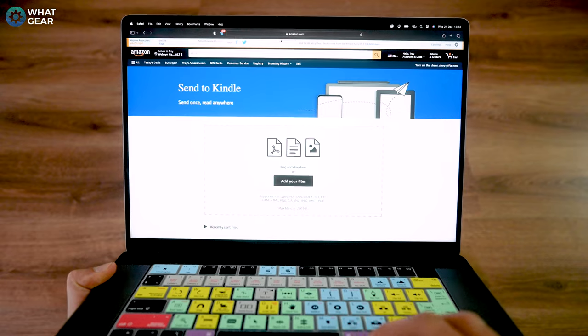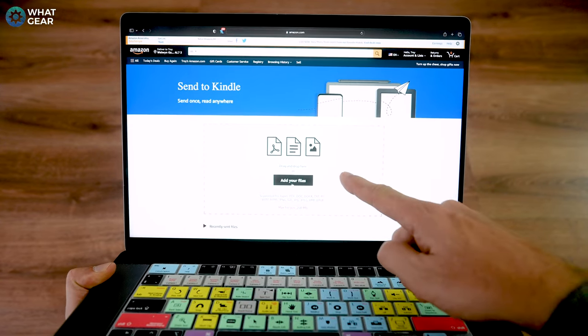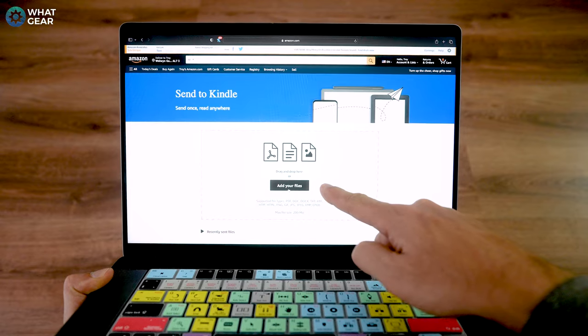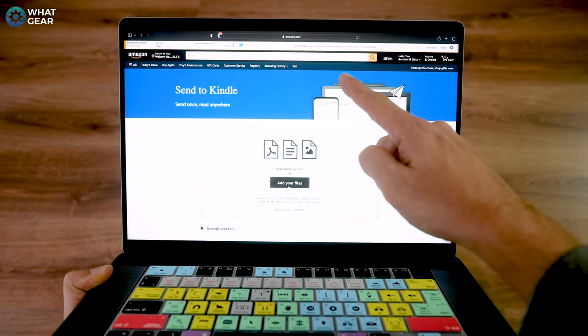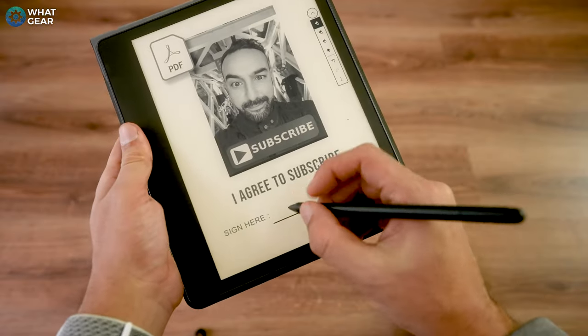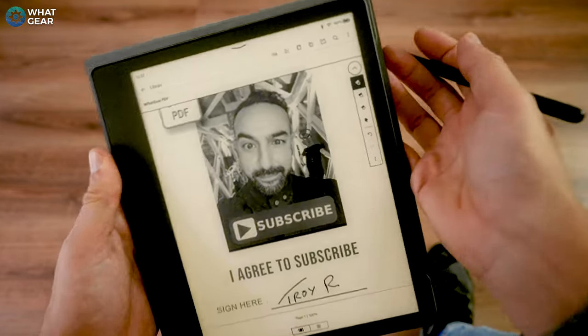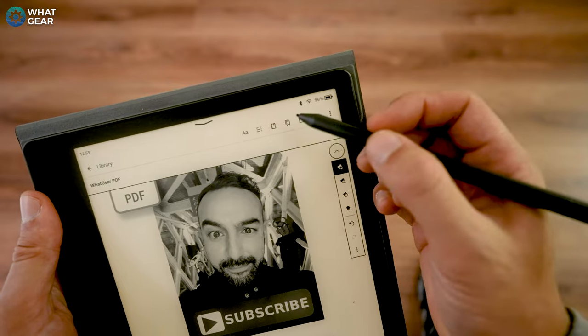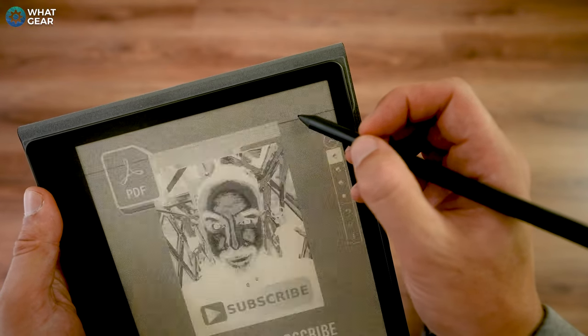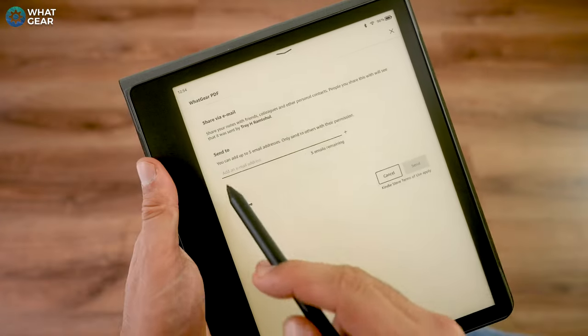Here you can simply drag documents from your PC or your Mac and they will appear in your Amazon Kindle library. You can now open them on the Kindle scribe and then using the pen you can sign the documents and it's easy to do. Once you've signed the document, tap the top of the screen, hit the square again with the outward arrow and again you can share this via email with up to five people.